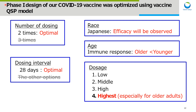This is a summary of the assessment for our Phase I design. The initial number of dosings and dosing interval were considered to be optimal, and we did not need to add other dosing regimens. Regarding ethnic difference, it was predicted that efficacy will be observed in Japanese subjects, similar to Caucasians. The immune response in older adults was predicted to decrease compared with younger adults, and the highest dose was added to the dosage levels in the Phase I study.